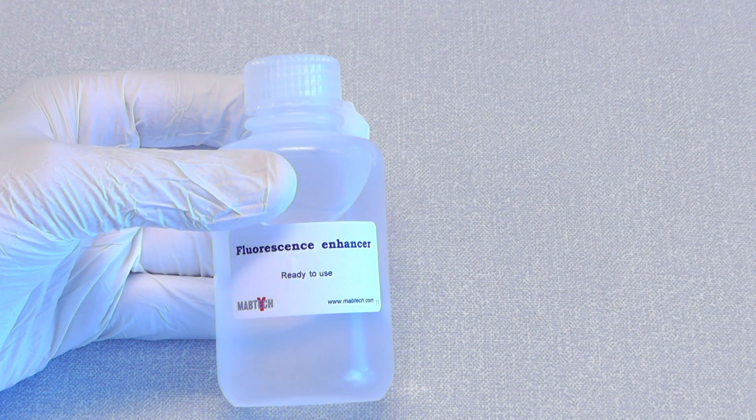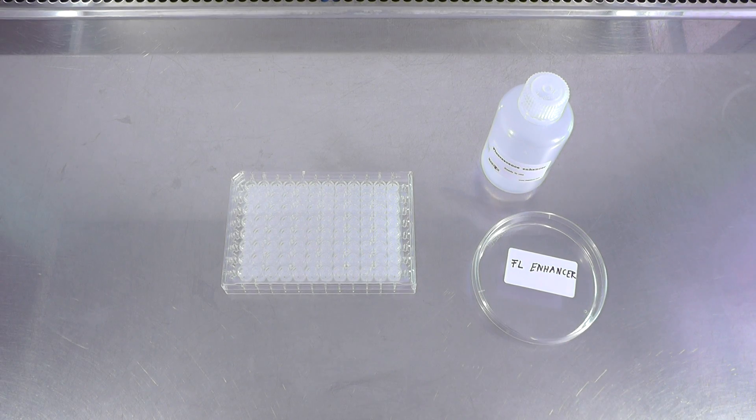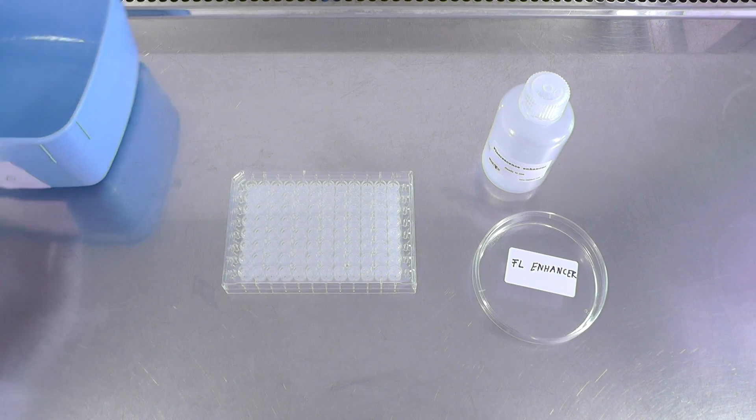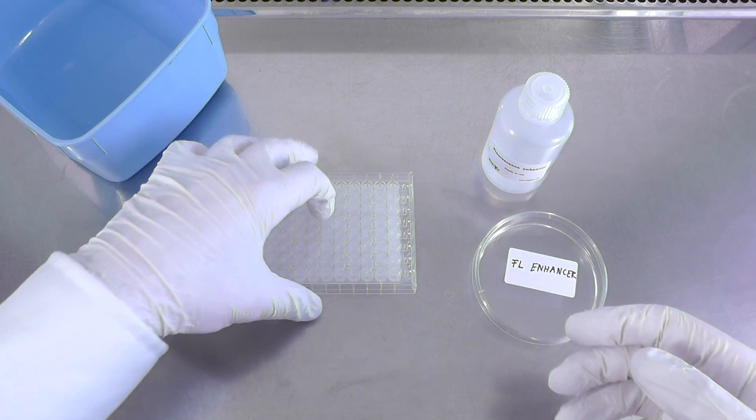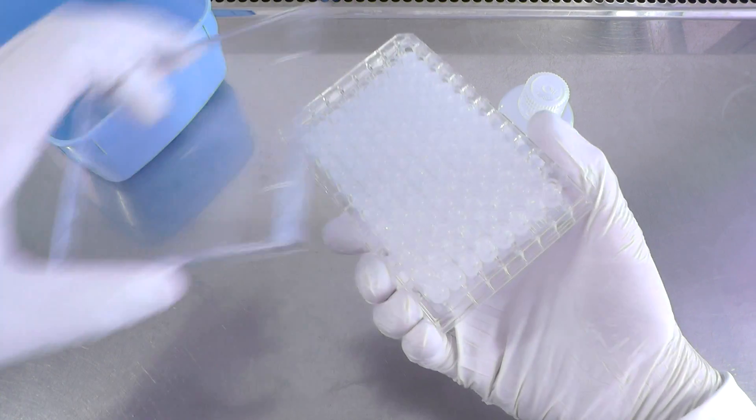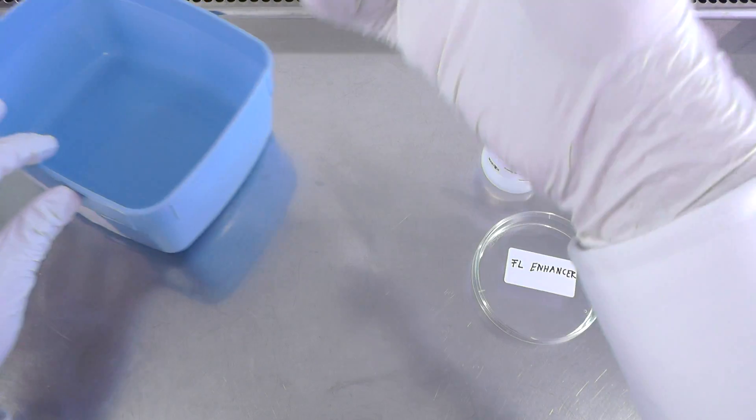The fluorescence enhancer solution is a critical component in the fluorospot assay that works just as its name implies. It enhances the intensity of fluorescent spots. The enhancer is added as a final step before the plate is dried and ready for analysis.